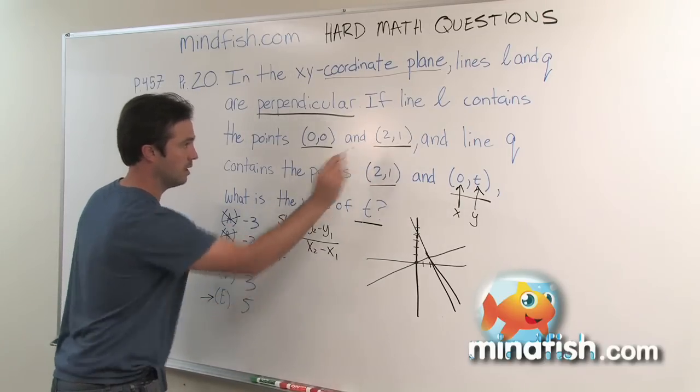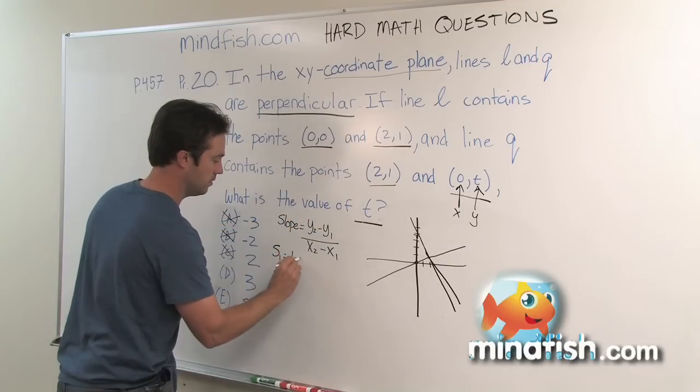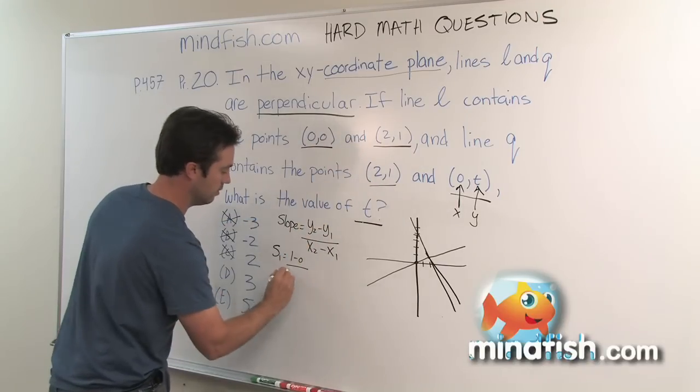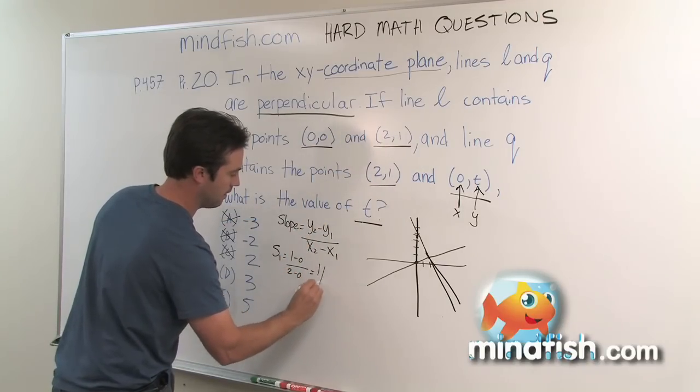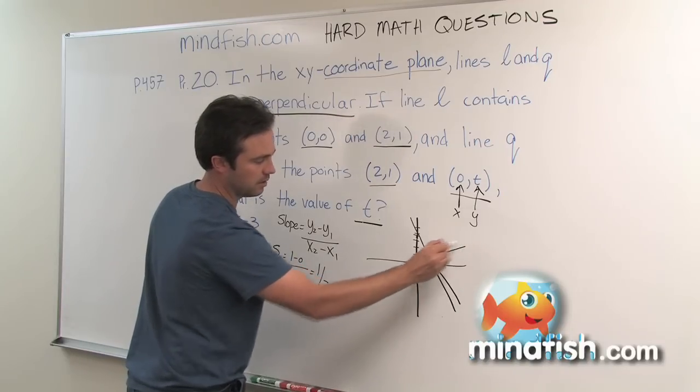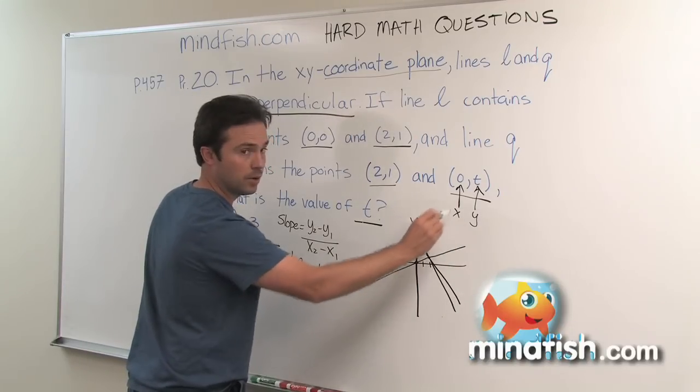So now we can see how to do the slope for that line. So the slope for that line is going to be one minus zero which is one over two minus zero which is two and that's one half. And that's reasonable given our slope of this line right here. It's positive but it's not quite one.